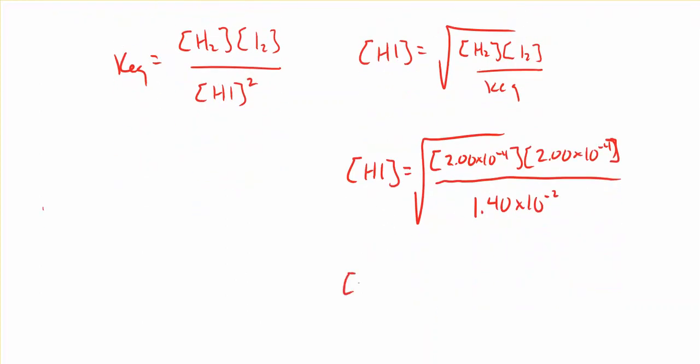Solving through for all of that, I get HI coming out to a value of 0.00169, or re-expressed in scientific notation, 1.69 times 10 to the minus 3 molar.